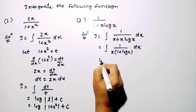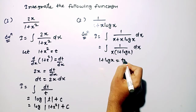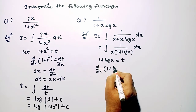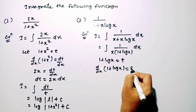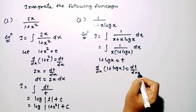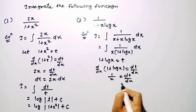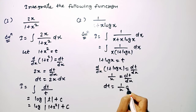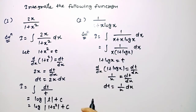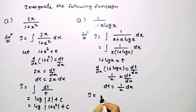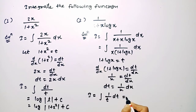We consider 1 plus log x equal to t, because the differentiation of log x is 1 upon x. Differentiating on both sides, we get dt by dx equal to 1 upon x, so dt equals dx upon x. Substituting, the integral becomes 1 upon t dt, which gives log t plus c.